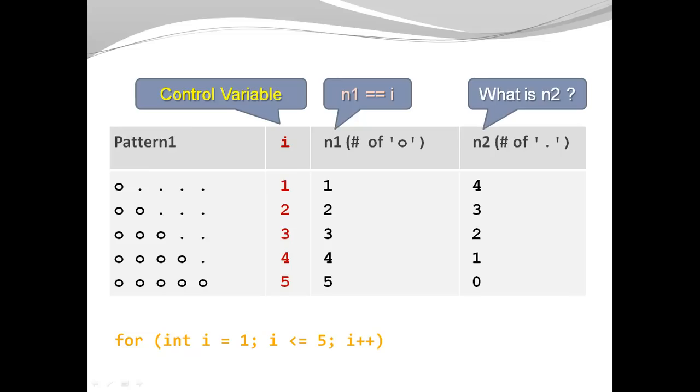And when I look at my control variable, i, and my n2, I can see my control variable gets bigger and bigger while my n2 gets smaller and smaller. And I also notice that the sum of i and n2 is always 5. So in my first row, i is 1, and n2 is 4. 1 plus 4 is 5.